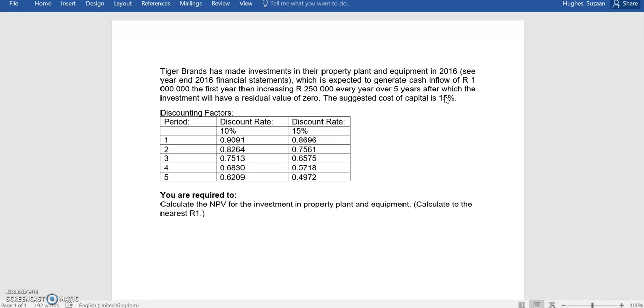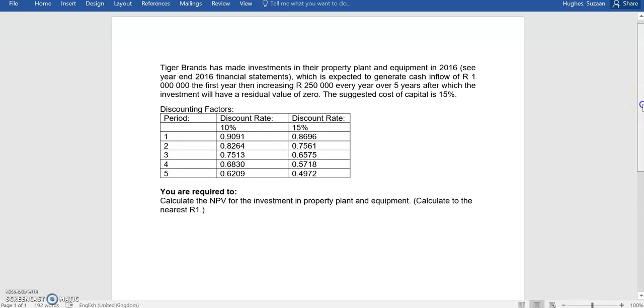You're required to calculate the net present value for the investment in property, plant, and equipment. Calculate it to the nearest rand. Before we do our calculation, it's always important to get prepared with a couple of the basics.